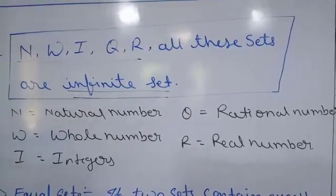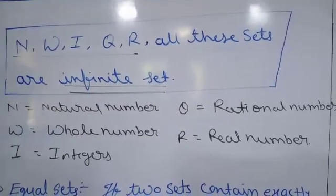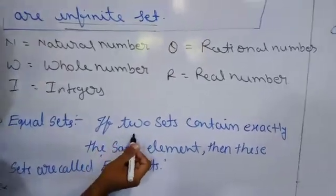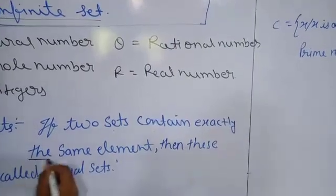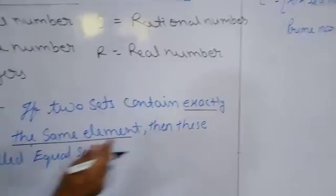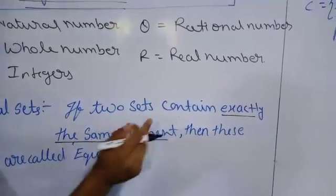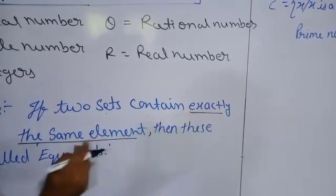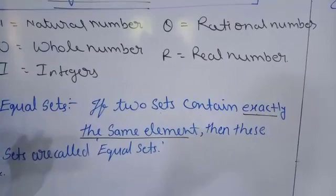We have one more type of set not yet included: equal sets. What are equal sets? If two sets contain exactly the same elements, then these sets are called equal sets. Remember, if we have two sets and the elements of these two sets are exactly the same, then only we can say these sets are equal sets.